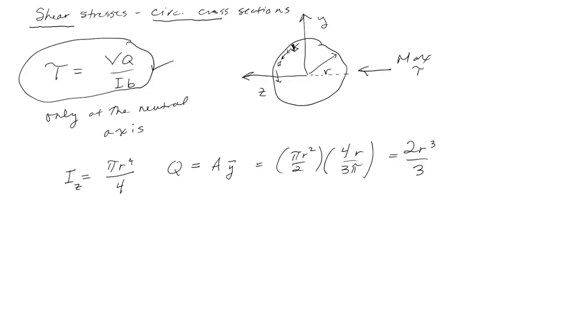And then b, so we've got I, here's I, we've got Q, and then we have b is nothing more than the diameter, which is 2 times the radius. So there we've got that. Okay, so if we take these equations specialized to a circular cross section and plug them into this VQ over IB equation and simplify, we end up with this particular equation that's only applicable to circular cross sections where we're measuring at the neutral axis for V over 3A. All right, so that's it for this particular concept. That's the only important piece of information that we need to remember.